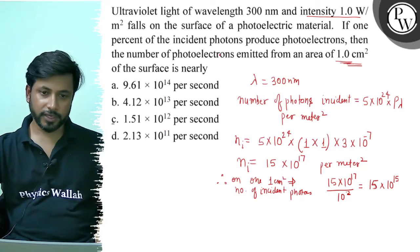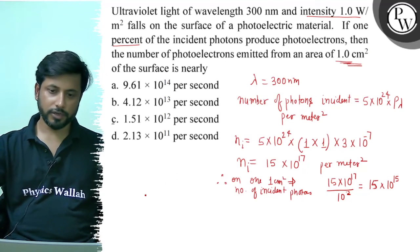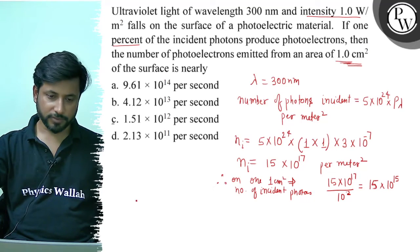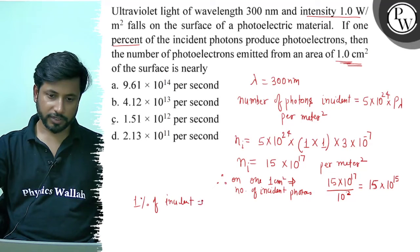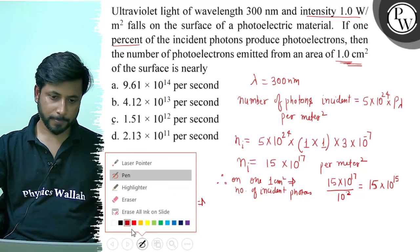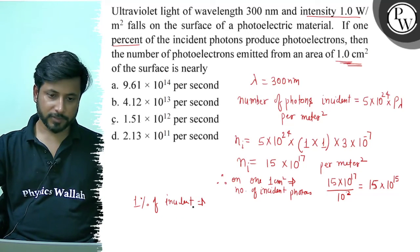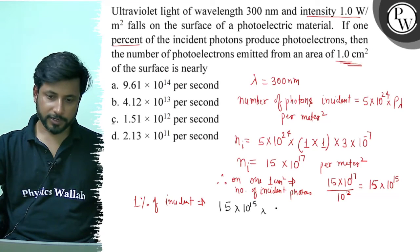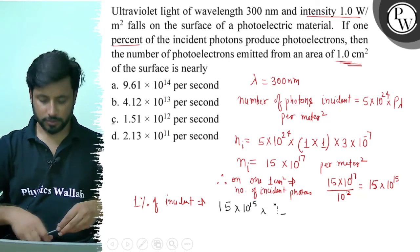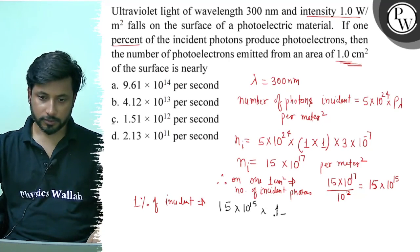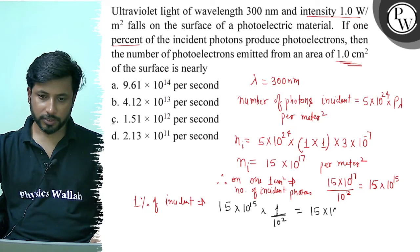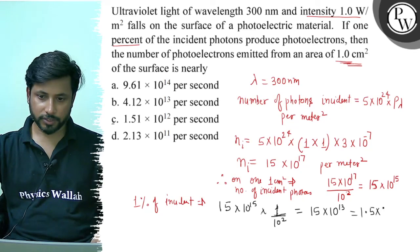Ab bol rahe hain ki sirf 1% of incident photons produce kar rahe hain photoelectrons. Inका 1% nikaal dein: 1% of 15×10^15 = 15×10^15 multiplied by 1/100 = 15×10^13 = 1.5×10^12 per second.